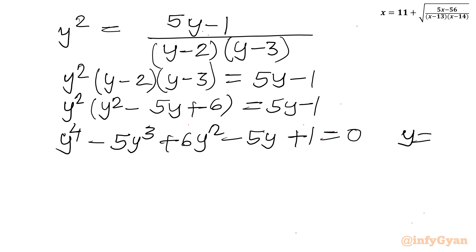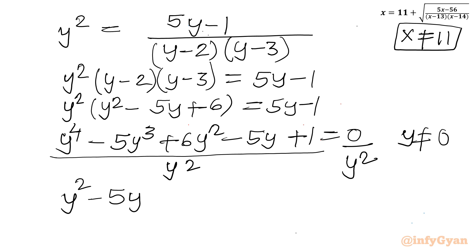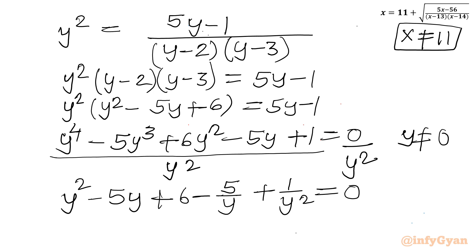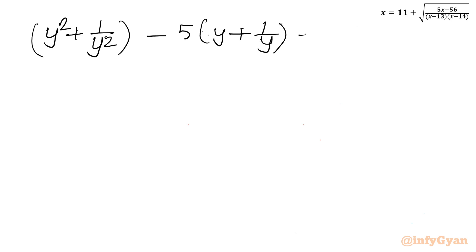Now y cannot be equal to 0, as x = 11 is not a valid solution. So I can divide this equation by y squared. After dividing: y squared minus 5y plus 6 minus 5/y plus 1/y² equal to 0. Now I will consider the first and last terms together, and the second and second-last terms together. So I can write (y² plus 1/y²) then take minus 5 common from (y plus 1/y).